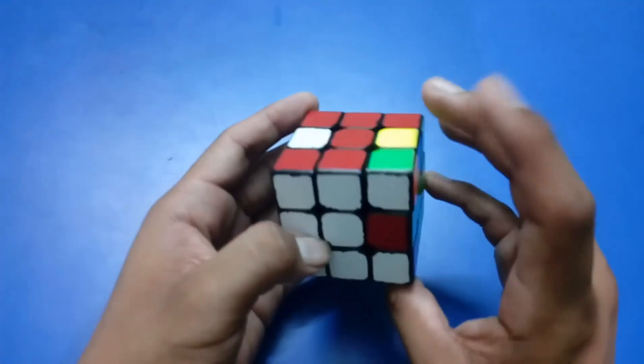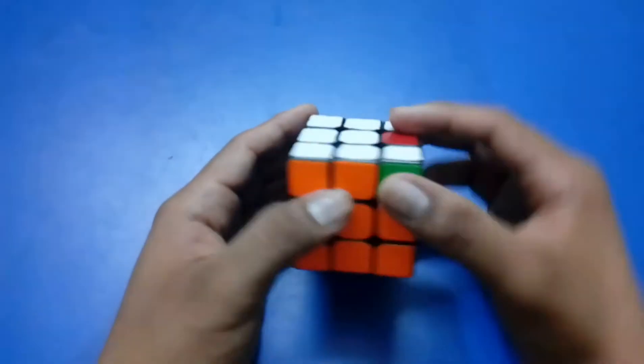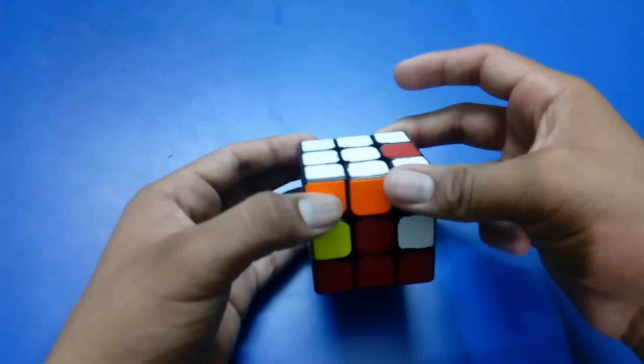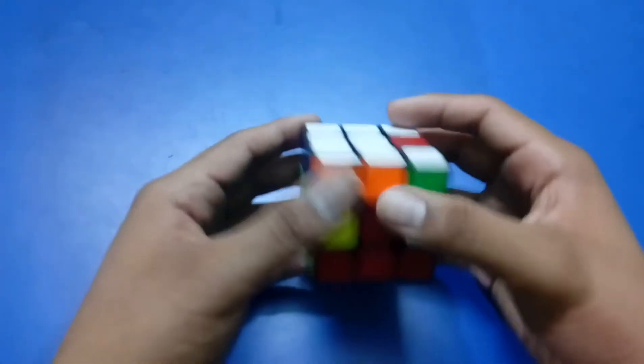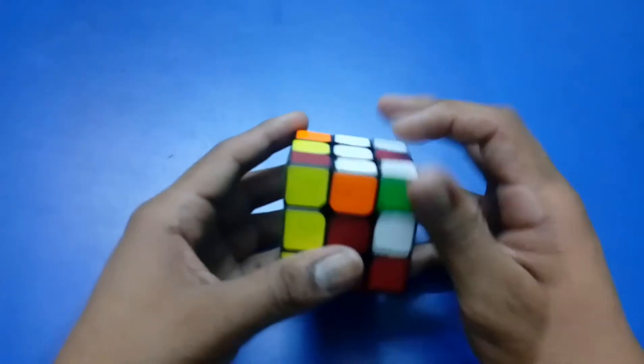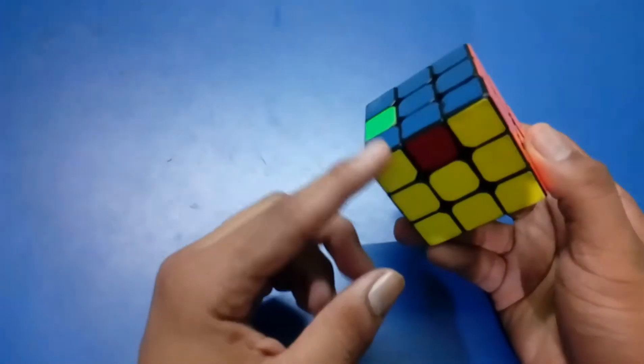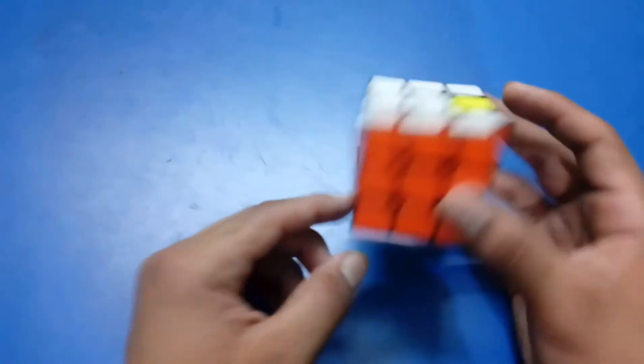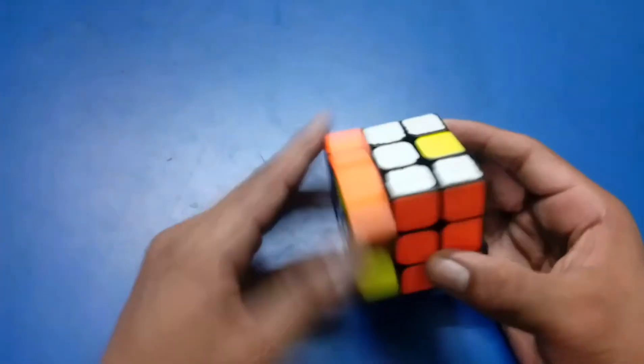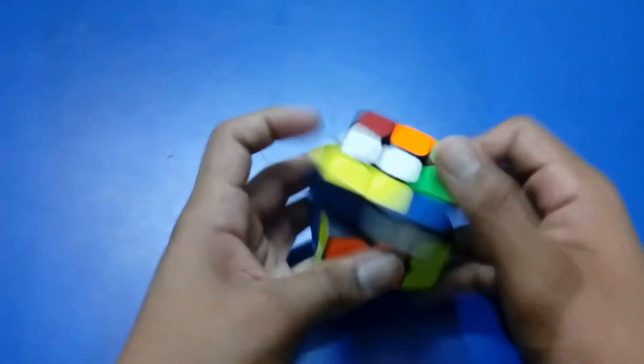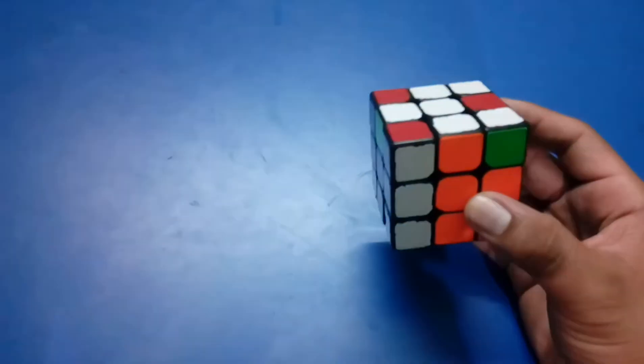Next is N which is right here, which can be done by doing a wide D2 and L prime, T-perm and undo. Lastly, not lastly, we have this piece which is V, R2 away, and the last one is just back there so it's an L, T-perm and you solved it.